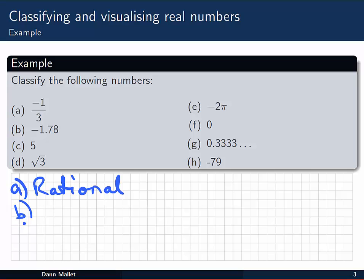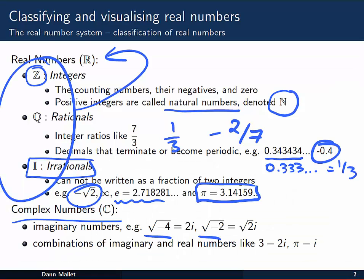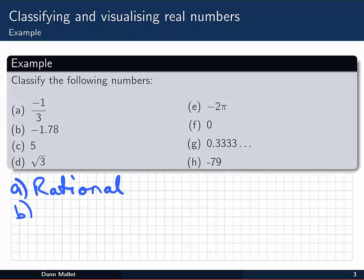Now looking at b, we've got minus 1.78. Now that's in decimal form, but notice that the decimal terminates. So going back to our classifications, terminating decimals again are rational numbers. So we can pop that one in, rational.